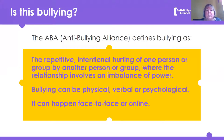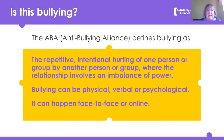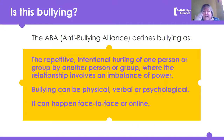The Anti-Bullying Alliance, who are the experts, say that bullying is the repetitive - which means it keeps happening - intentional - which means somebody's doing it on purpose - hurting of one person or a group by another person or group, and usually there's an imbalance of power. So it might be that someone's older, someone's bigger, or it could be they feel like they've got more friends. Bullying can be physical, verbal, or psychological - making you feel uncomfortable in your head - and it can happen face-to-face or online.